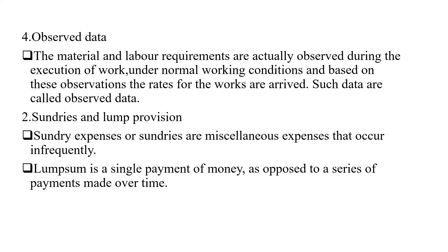Observed data applies to works that are special in nature, or works for which material requirements cannot be calculated theoretically, and works that occur occasionally in the construction of buildings where standard data is not available. In such cases, the materials and labor requirements are actually observed during execution of the work under normal working conditions, and based on these observations the rates for the works are arrived at. Such data is called observed data.